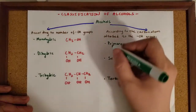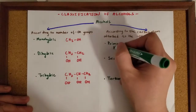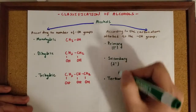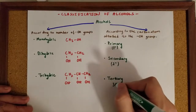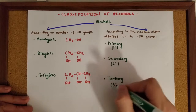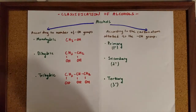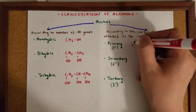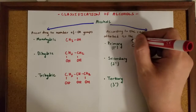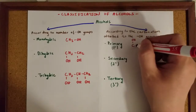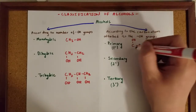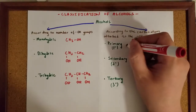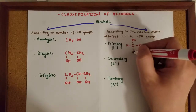Primary alcohols are often shown like this, secondary alcohols like this, and tertiary alcohols like this. In the primary alcohols, the carbon atom which is attached to the OH group is connected only to one radical. The other two connections are to hydrogen.